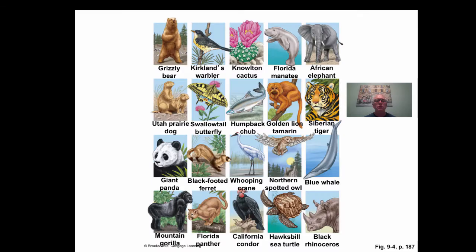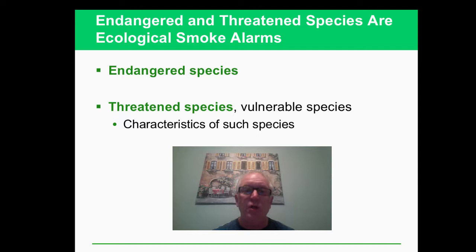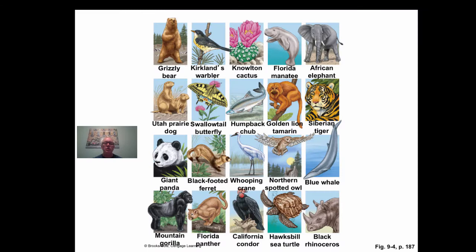Some of the characteristics of at-risk species are that they exist in a small area. Endemic species are in a small area and only have a small amount of different foods or a small range of things to keep them alive. That's going to be characteristic of endangered and threatened species in a lot of ways.